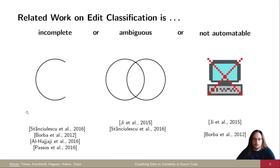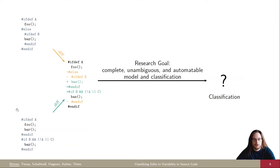We cannot automatically determine the impact of a certain edit operation. So our research goal is, given a change to the code base, to get a complete, unambiguous, and automatable model and classification for edits to variability.